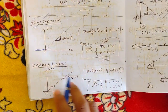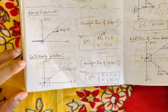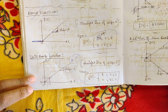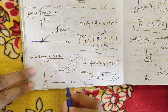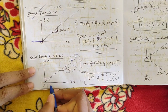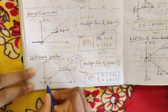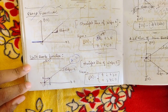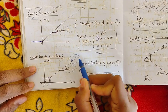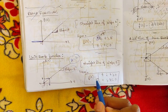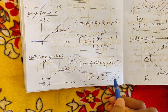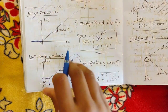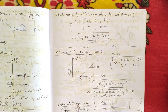Next is the unit ramp function. For the unit ramp function, the value of 'a' is equal to 1, meaning the slope is equal to 1. So the equation becomes f(t) = t for t ≥ 0, and f(t) = 0 for t < 0. A straight line with slope equal to 1 is called a unit ramp function.